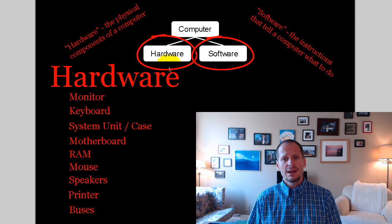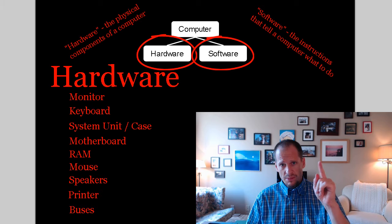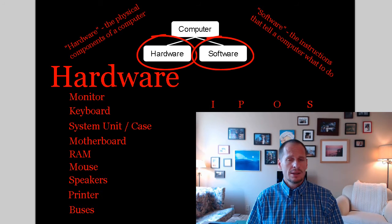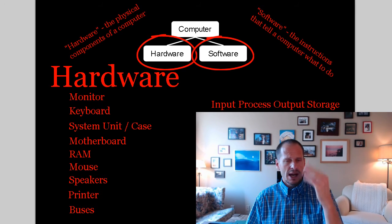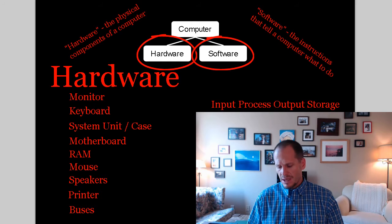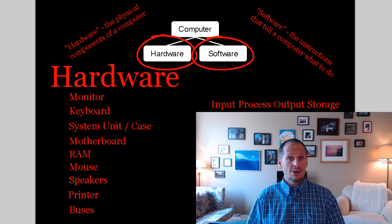We could further define hardware by whether a piece of hardware is an input device, because computers do four things — remember the acronym IPOS? The four things a computer does are input, process, output, storage — IPOS. And we could further define hardware components based upon whether they're an input, a processing, an output, or a storage component. That's another way that we categorize hardware componentry.